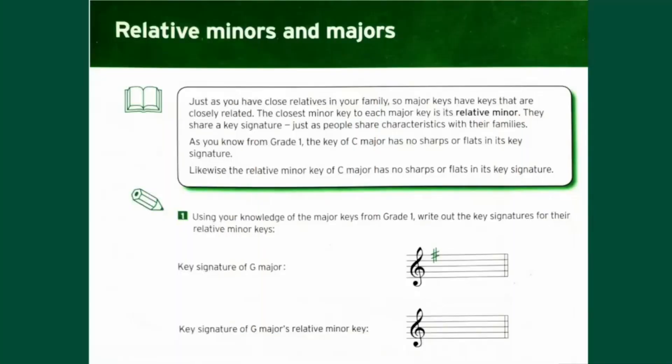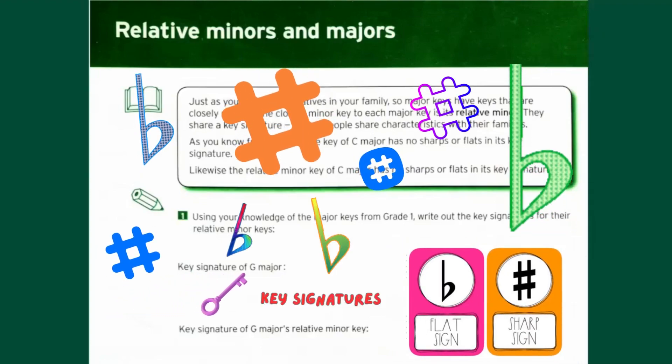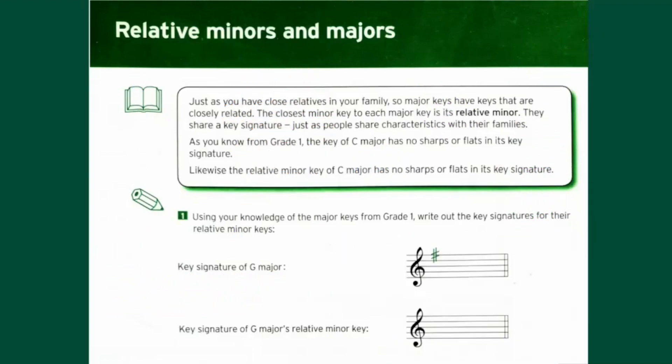This week we are going to be learning about relative minors and majors on page 22. Just as you have close relatives in your family, so do major and minor keys, as they are related to each other because they share the same key signature. This means each major key has a relative minor key which shares the same key signature.